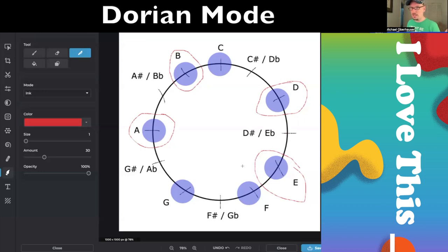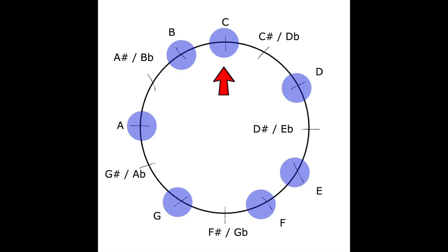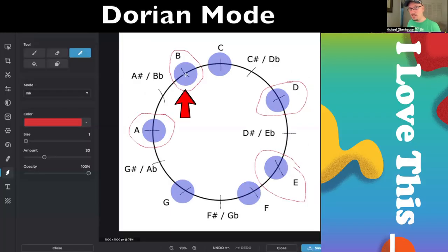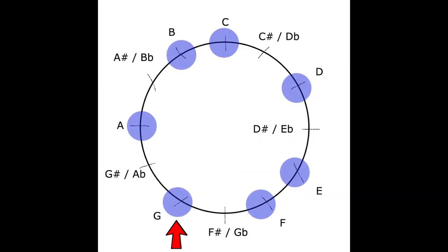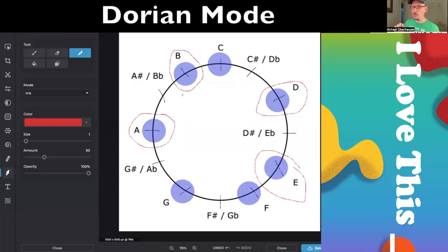The Dorian mode is essentially a minor scale with one pitch changed. What is that pitch? It's this B. The sixth scale degree of the Dorian mode is raised. If this were D minor, that would be a B flat and not a B. So here's D minor. And here's D Dorian.